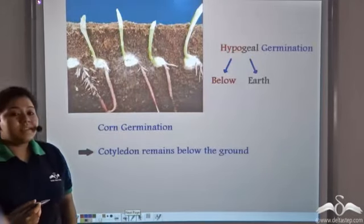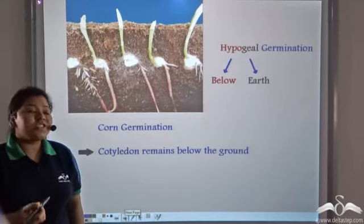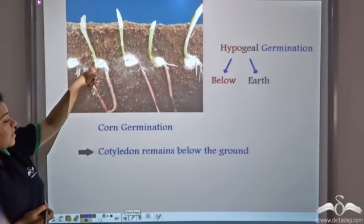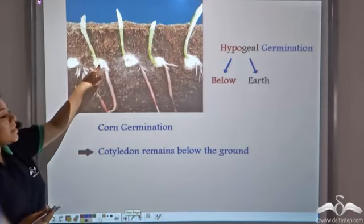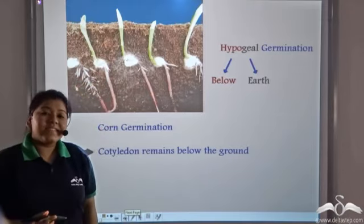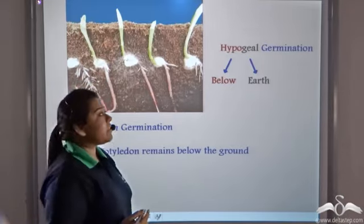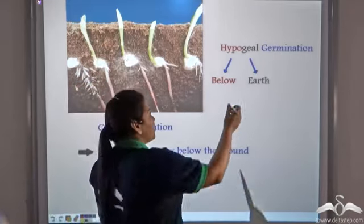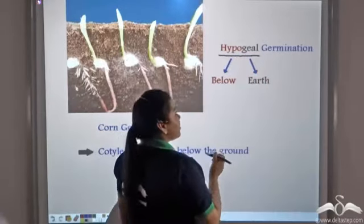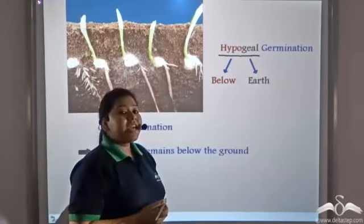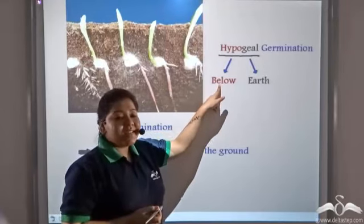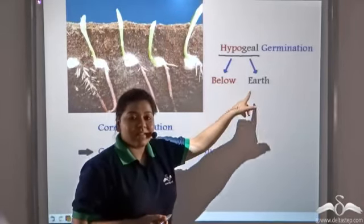In case of corn germination, the cotyledon remains below the ground, and hence this germination is known as hypogeal germination. 'Hypo' means below and 'geal' means the earth.